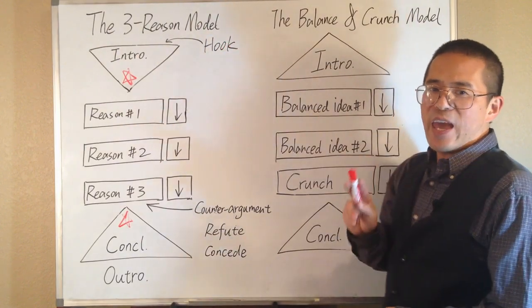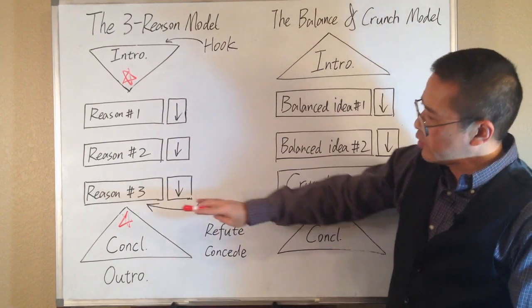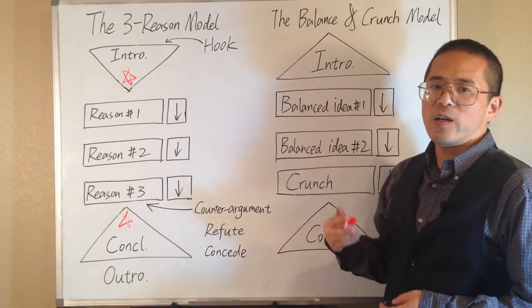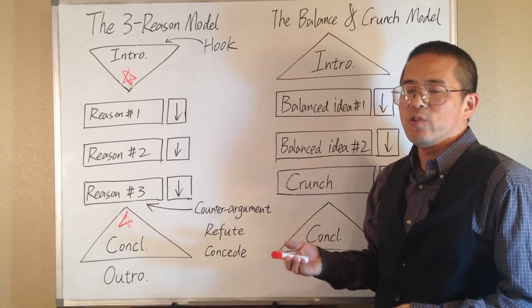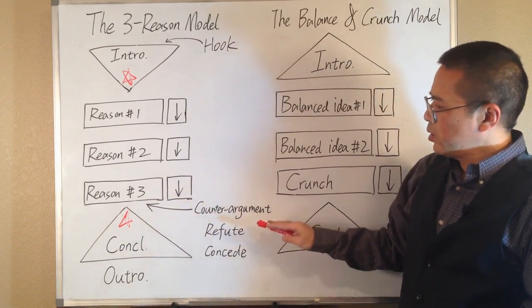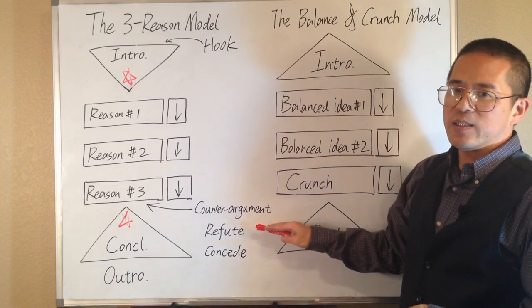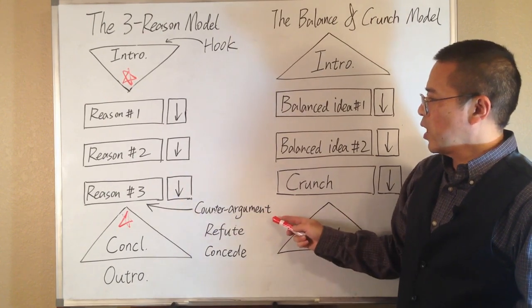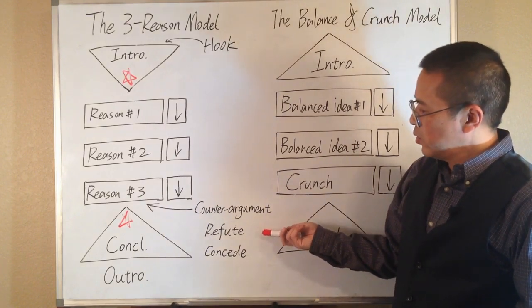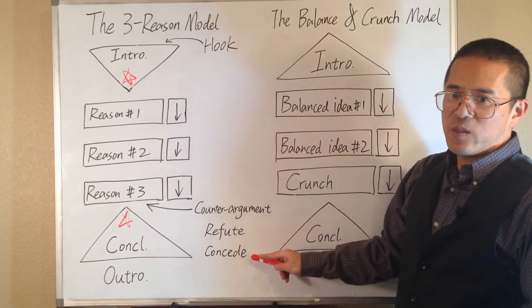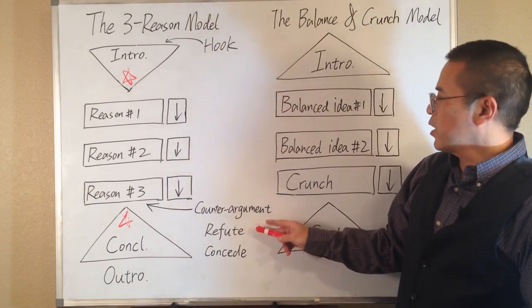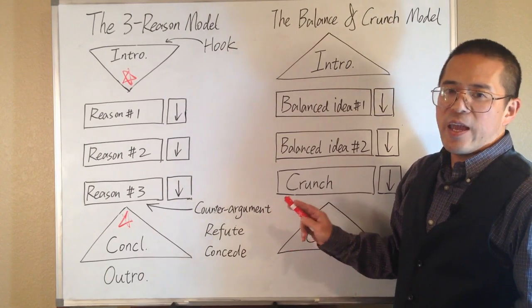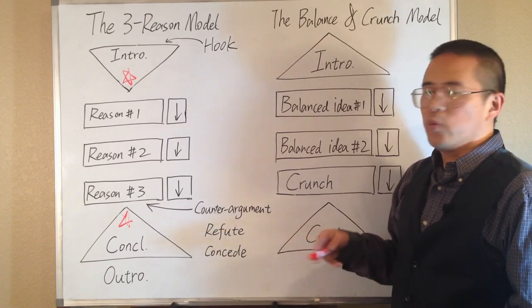We may also want to add a counter-argument after the third body paragraph, to demonstrate that we are intelligent enough to understand there are other sides to the issue. Adding a proper response to the counter-argument can make our points seem more legitimate. There are two ways to respond to counter-argument. We can refute or concede. To refute means we think the counter-argument is wrong. To concede means we admit the counter-argument has some good points, but we have a better point. Our opinion is stronger.